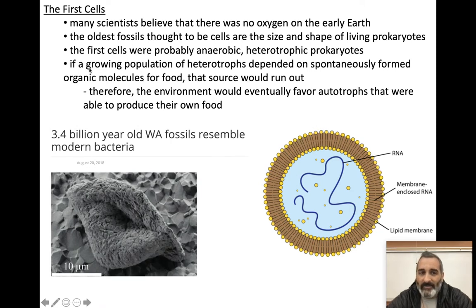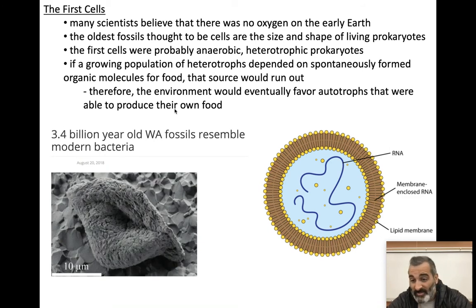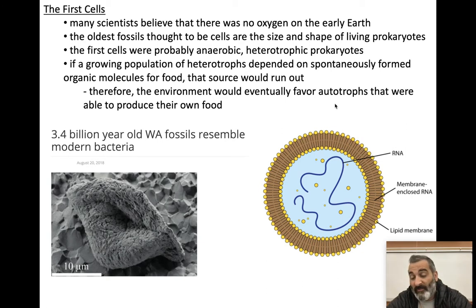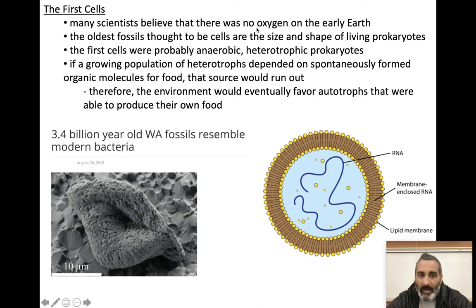This next statement is kind of confusing. If this population of bacteria, these heterotrophs, started to grow, they would run out of food pretty quickly, because their food had to form spontaneously. So eventually they'd run out of food if their population got big. Over time, autotrophs — things that did photosynthesis — were more favored. When those organisms did show up, it was easier for them to survive because they didn't have to find food; they could make their own food using CO2 from the air and water, producing their own sugars.